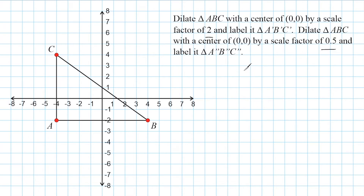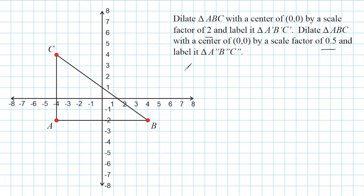The first part asks us to dilate our triangle by a scale factor of two, which means we have to stretch it. Any scale factor greater than one will effectively stretch out a shape, while any scale factor less than one — such as 0.5 — will shrink the original shape. The strategy I'm going to use is to write down the original coordinates and then multiply each value by our scale factor, which is two.